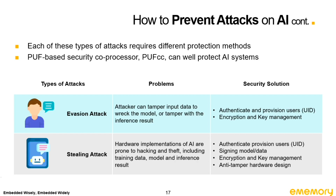For the evasion attack, unlike the previous methods that target training and the model, evasion attacks pose a problem with input data. Attackers can tamper with input data to influence the output or results. That's why we must authenticate and provision users using a unique ID and encrypt the assets. For the stealing attack, the last attack involves theft of all AI assets. To avoid attackers stealing valuable data and know-how from AI hardware, we need a unique ID, signing, encryption, and anti-tampering hardware design to deter attackers.